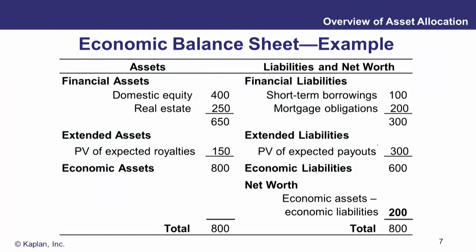Now let's bring it all together onto an extended balance sheet. On this slide, we've got a traditional balance sheet on the top half — assets on the left, liabilities on the right. Here are a couple of traditional assets for an institution: domestic equities at 400, and 250 in real estate, so the total of their traditional assets is 650. On the right-hand side, they've got short-term borrowings and mortgage obligations totalling 300 in traditional liabilities, giving net assets of 350.